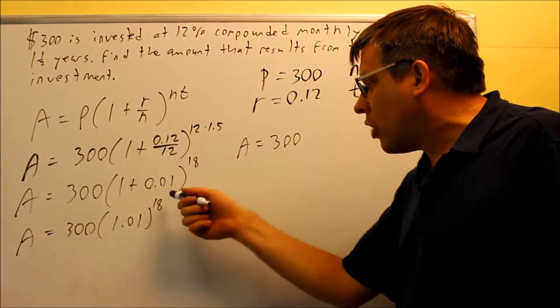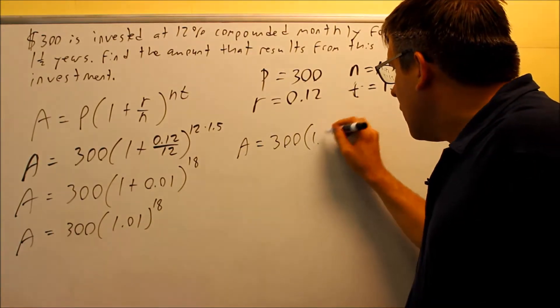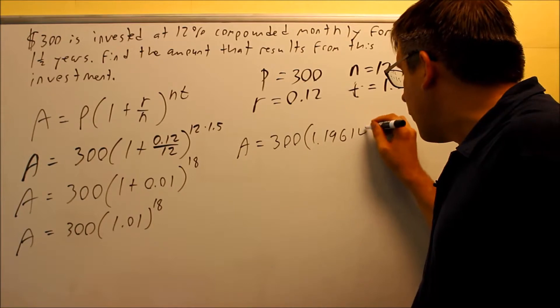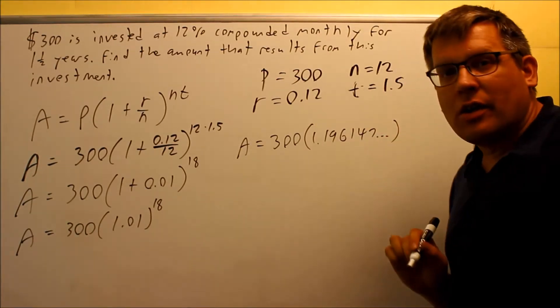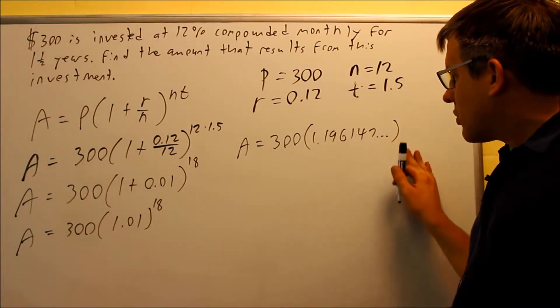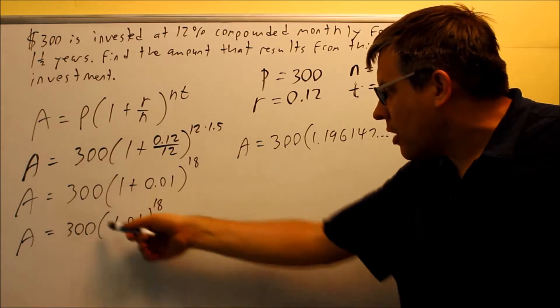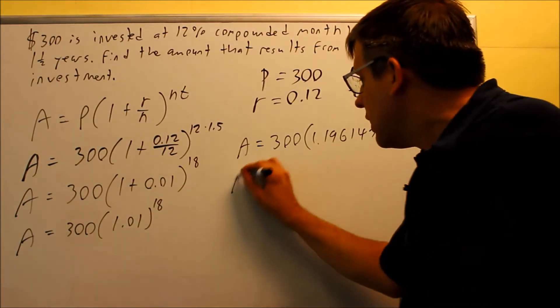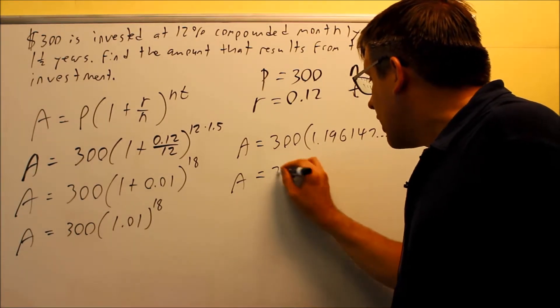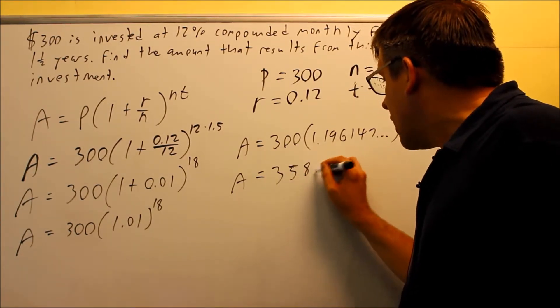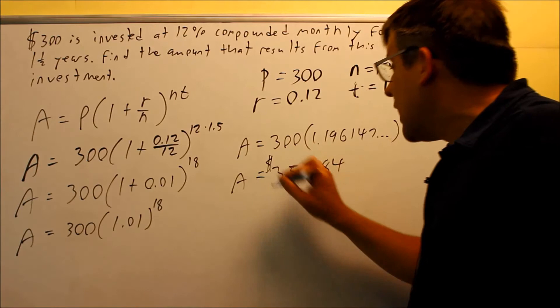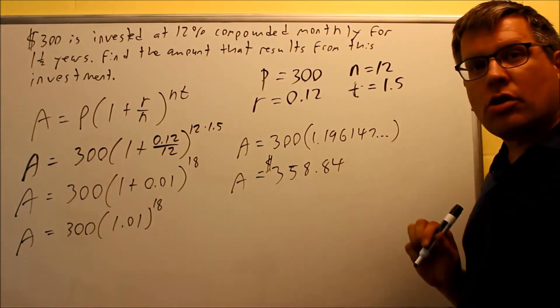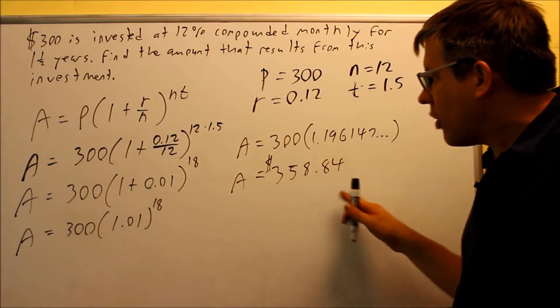If I take 1.01 and raise it to the 18, then I'm going to get 1.196147, some more decimals you'll get after that. So you would get this number if you just do the exponent part separately. Then you're going to hit times 300, and that's going to give us the final answer, which is $358.84. So this is what you should get in your calculator once you go through all these steps.